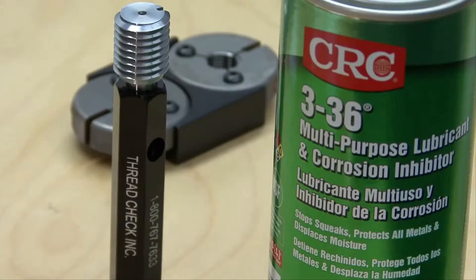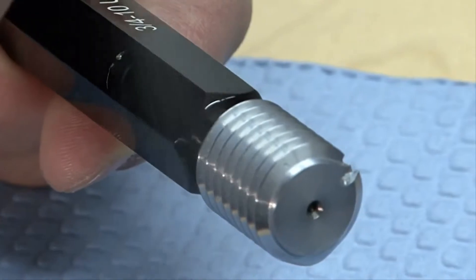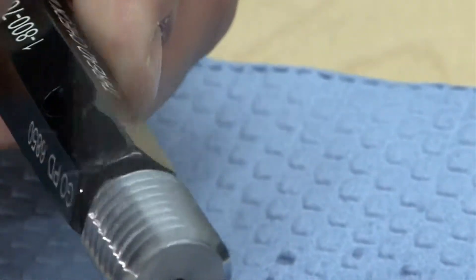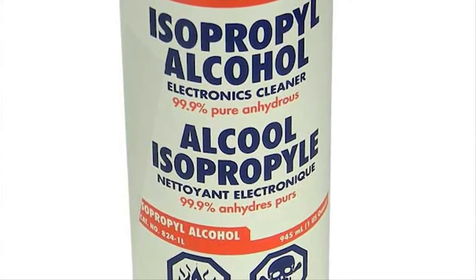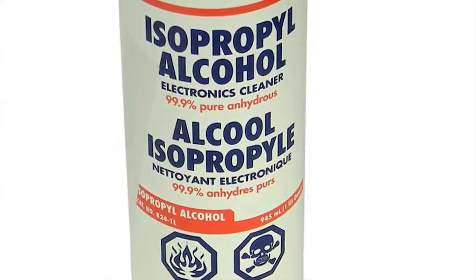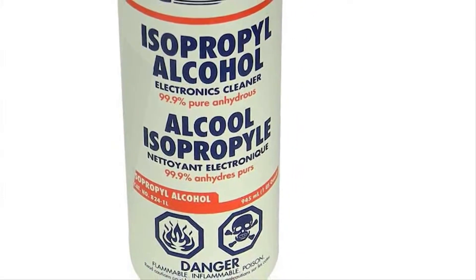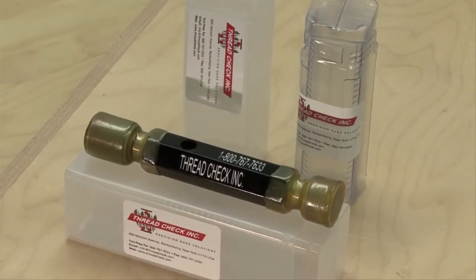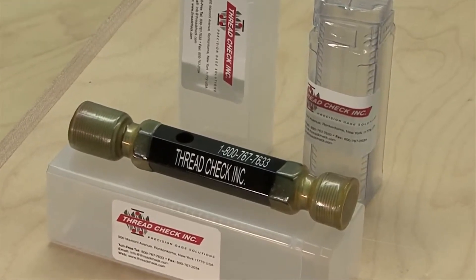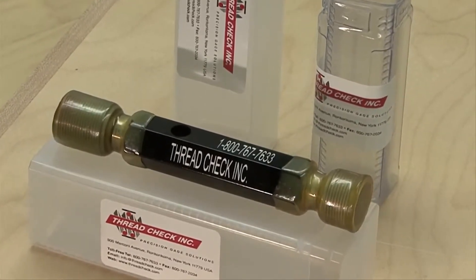Thread plug gauges should be cleaned with solvent or air and then frequently re-coated with a rust preventative. In clean room environments, isopropyl alcohol may be substituted to help reduce friction on the gauges. Thread plug gauges should be protected in plastic tubes and coated in wax when not in use to prevent nicks to the threads.